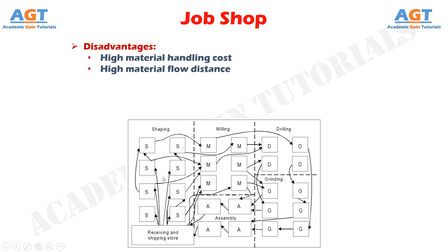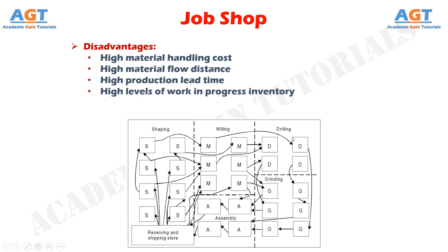High production lead time: each part in a batch must wait for the remaining parts in its batch to complete processing before it is moved to the next stage of production. This causes high production lead time and low production rates in job shop manufacturing. High levels of work-in-progress inventory result from this high production lead time.